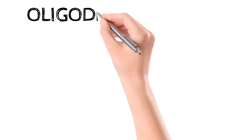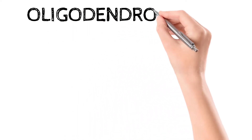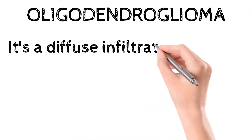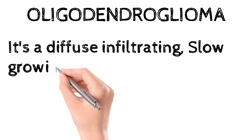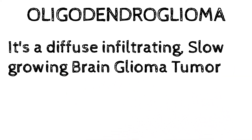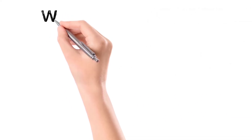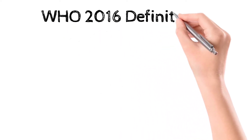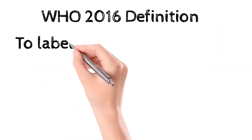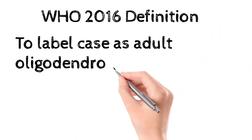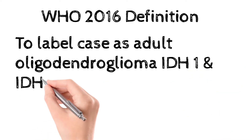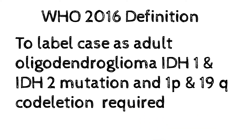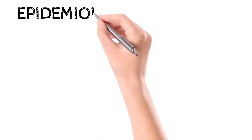Today I'm going to teach you about oligodendroglioma brain tumor, which is one of the common glioma brain tumors. It's a diffuse infiltrating slow-growing brain tumor. As per the WHO 2016 definition, a case is defined as oligodendroglioma adult type only if there is a presence of mutation of IDH1 and IDH2 along with 1p and 19q co-deletion — that is, short arm of chromosome 1 and long arm of chromosome 19.